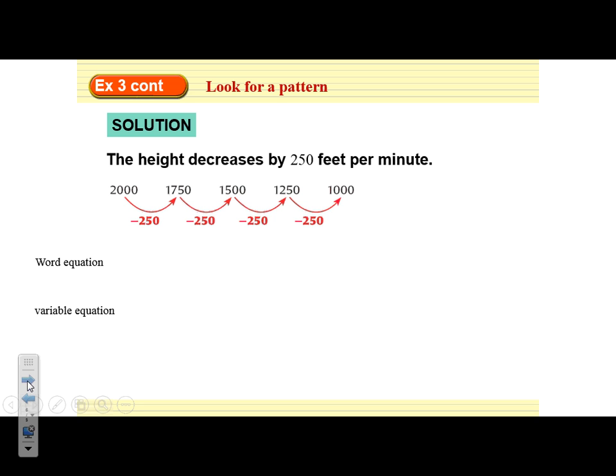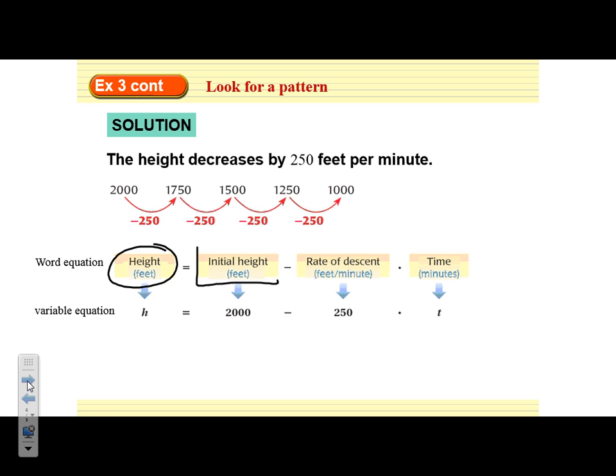And now if we think about this as a word equation, we have a word equation here where the height of the paramotorist can be calculated by thinking about his initial height and subtracting the rate of descent, so how fast he's going down each minute, times the number of minutes that he's in the air. So if we plug in what we know, this is the initial height, this is how fast he's descending, and then that's multiplied by t - for every minute he's going to descend another 250 feet.